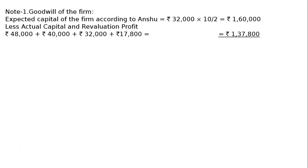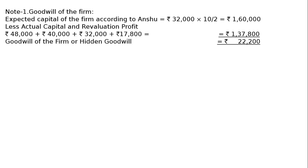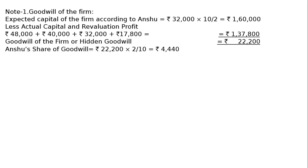Making the revaluation account in rough, the profit is Rs. 17,800, giving a total of Rs. 1,37,800 in all. After deducting that, we get Rs. 22,200. This is the goodwill of the firm, or hidden goodwill. After getting this, we proceed to the next step.